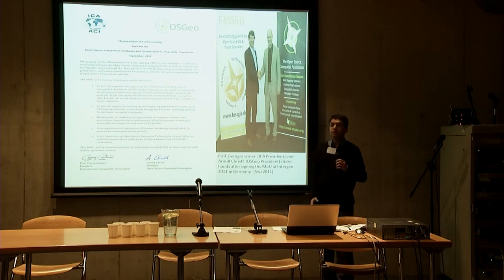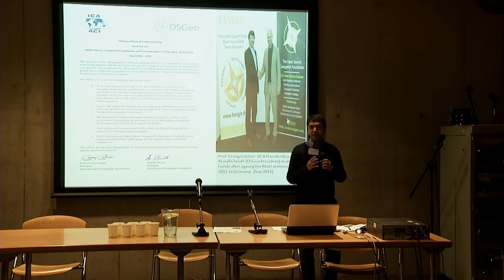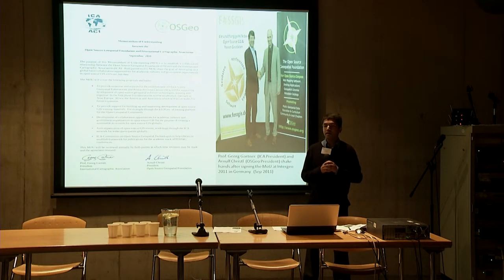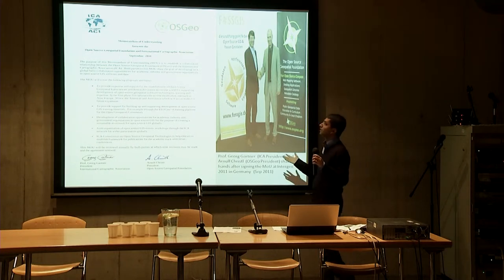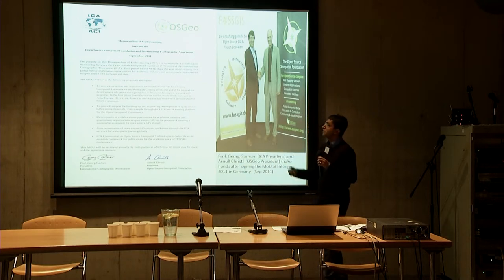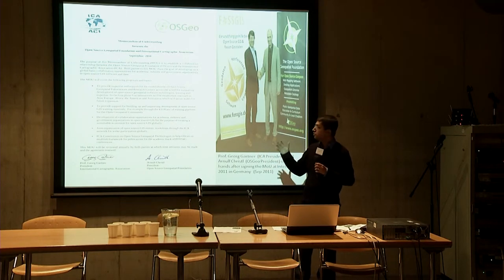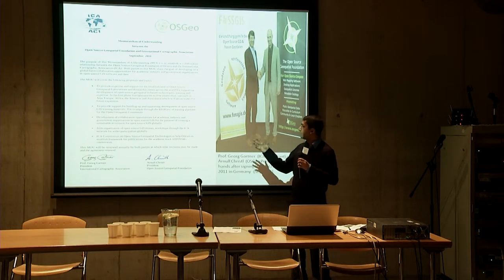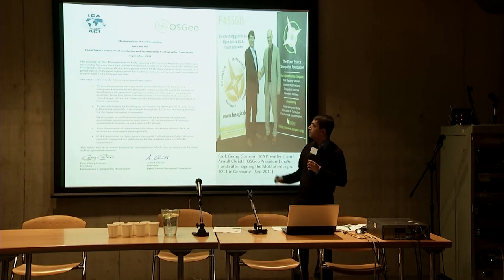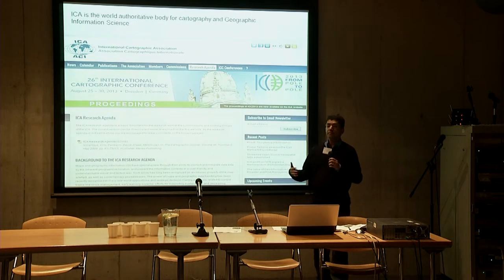Two years back, two organizations — the Open Source Geospatial Foundation and the International Cartographic Association — came together and had an MOU to look into ways of how we can work together to enable more students to learn geospatial science. We didn't have any money or anything, but we had a set of principles to start from. One of the key principles was that in five years' time we wanted to establish five labs across the world. We also wanted to create e-learning platforms and create collaboration opportunities, and at the time we had no idea how we were going to do it, but once we set up that mechanism we started moving ahead.